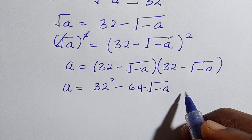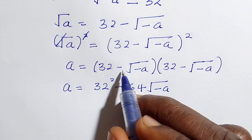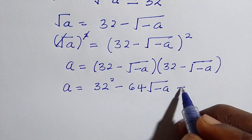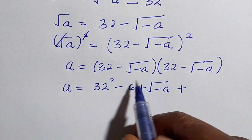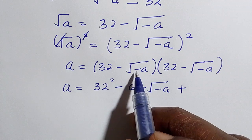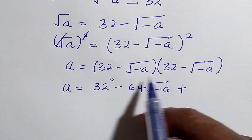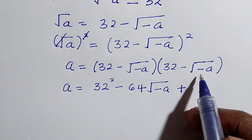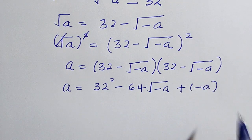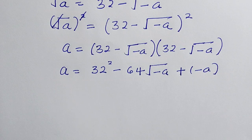When we expand this out we have a equals 32 squared minus 64 square root of minus a. Then minus multiplied by minus becomes plus, so root minus a multiplied by root minus a gives us minus a.